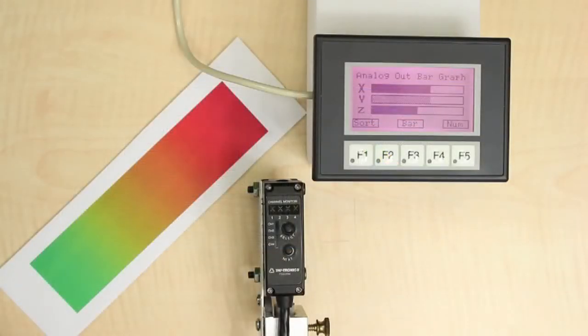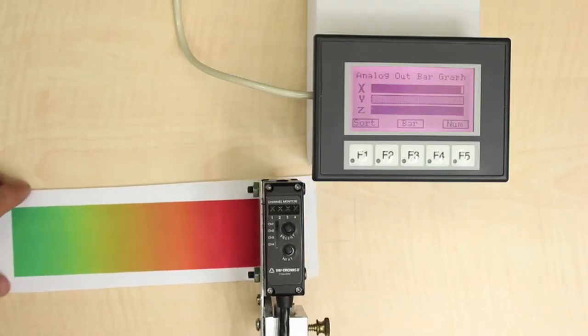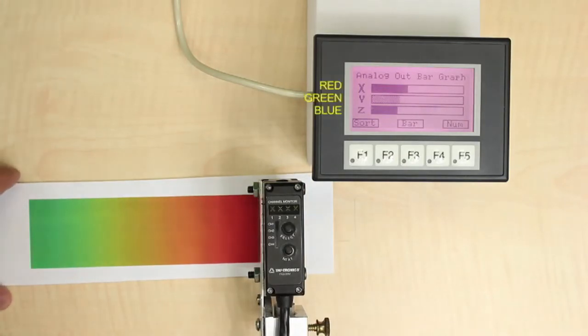Let's take a look at a simple example using the XYZ outputs. Here we have a printed stripe with a red to green transition, representing a color change in a process. This could be a chemical reaction, the application of a paint or coating, the changing color of a fluid over time, or similar application.